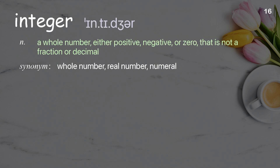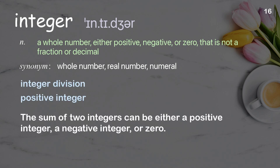Integer. A whole number, either positive, negative, or zero, that is not a fraction or decimal. Examples: integer division, positive integer. The sum of two integers can be either a positive integer, a negative integer, or zero.